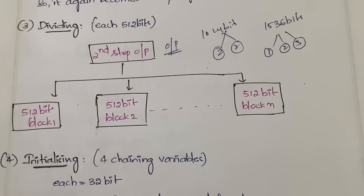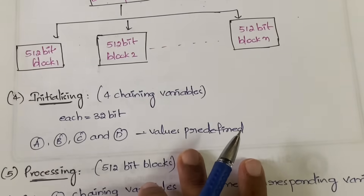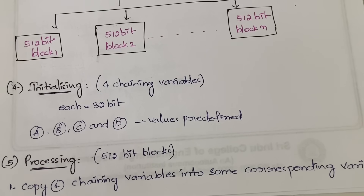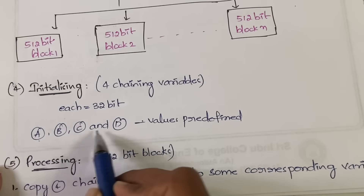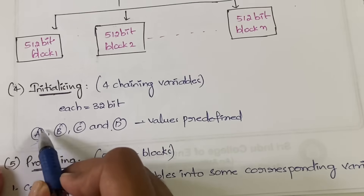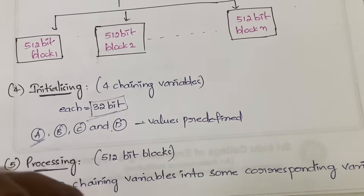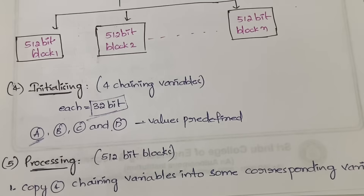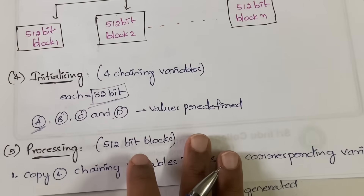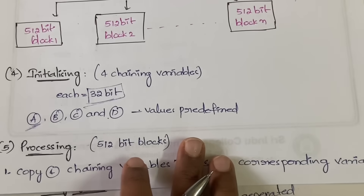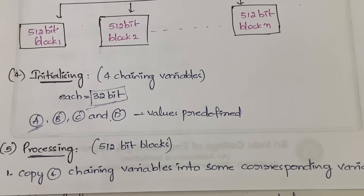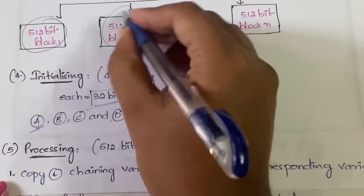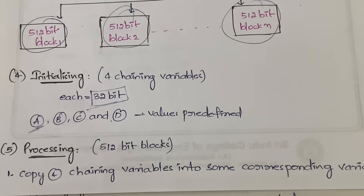In the fourth step you initialize four chaining variables, represented as A, B, C, and D. The length of each variable is 32 bits, and these chaining variables have predefined values. In the processing step, the first thing you do is copy those four chaining variables into corresponding variables: capital A from small a, capital B from small b, capital C from small c, and capital D from small d.